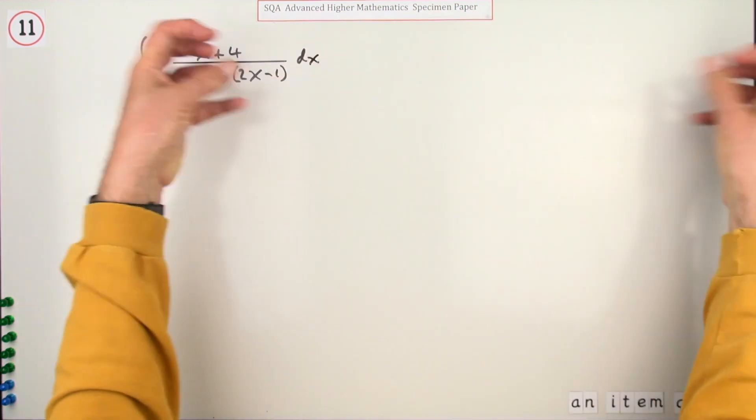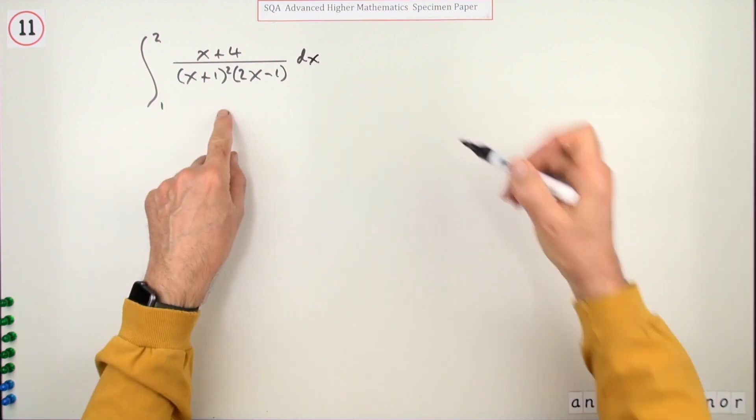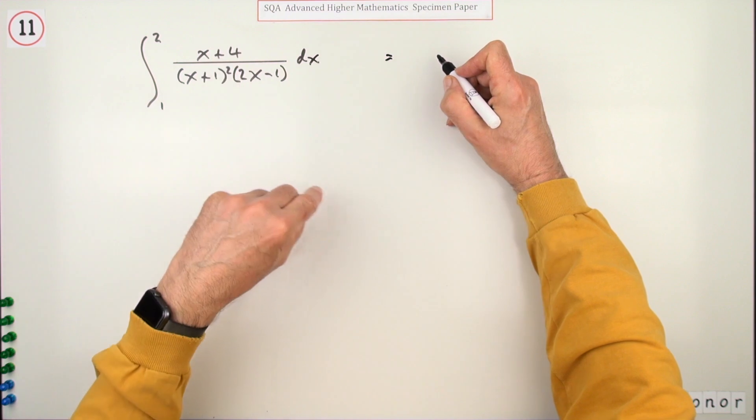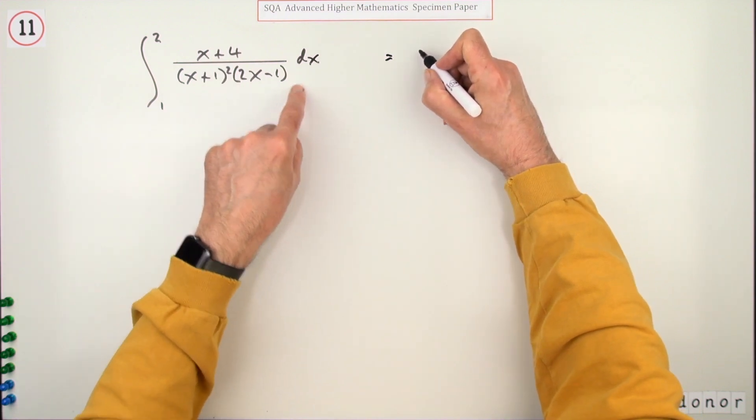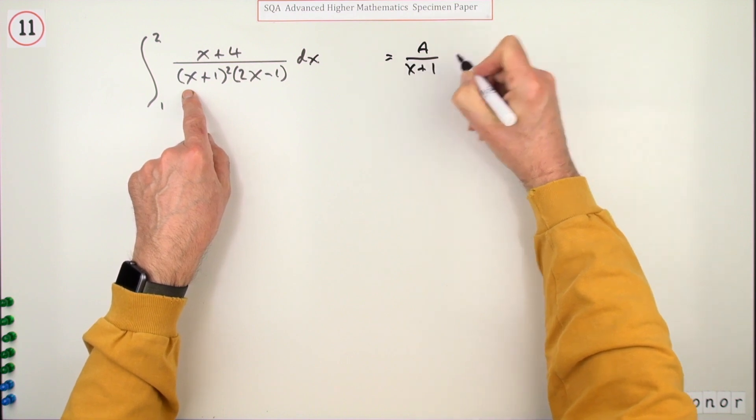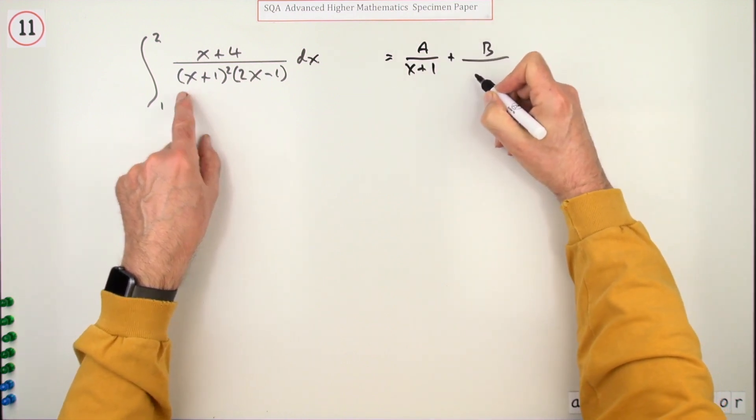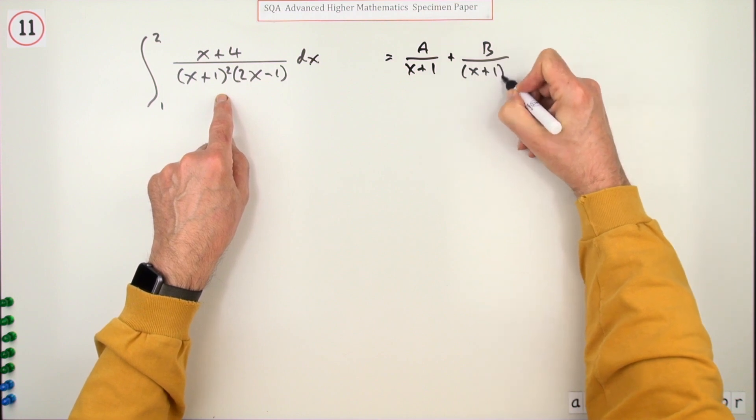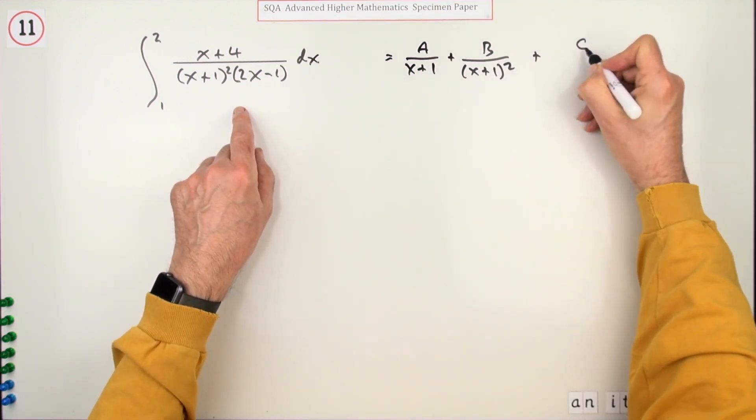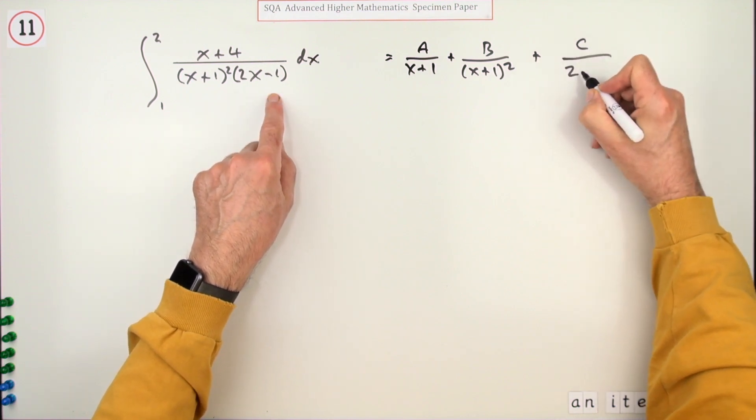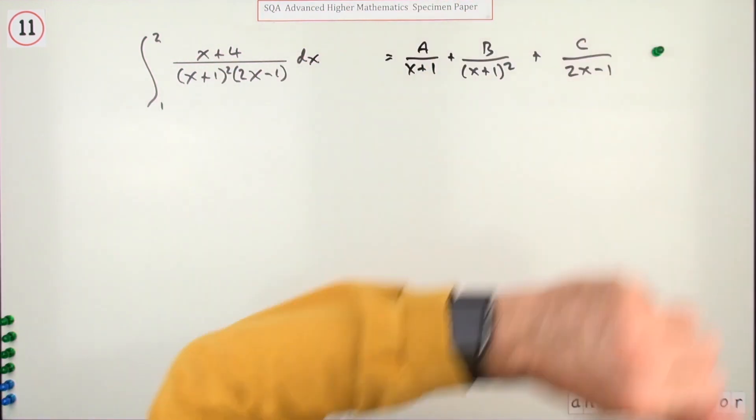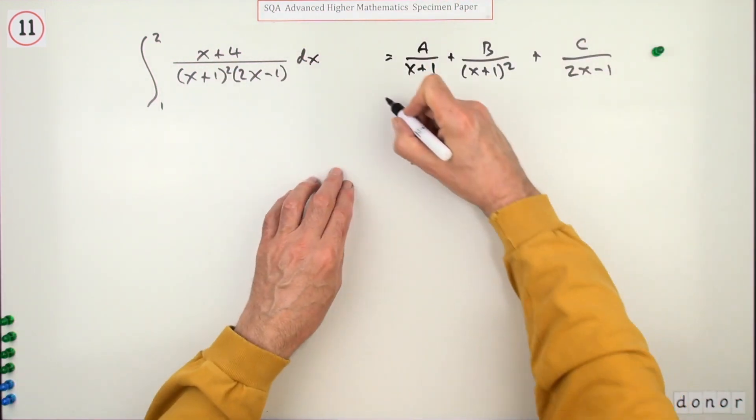Just borrowing the integrand here, the part which is being integrated, I can rewrite this portion as A over this linear one x+1, plus B over the repeated term (x+1)², plus C over the other linear factor in the denominator 2x-1. Just writing that out gets you the first mark.